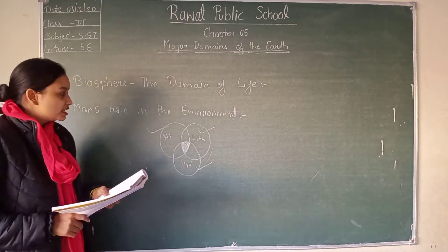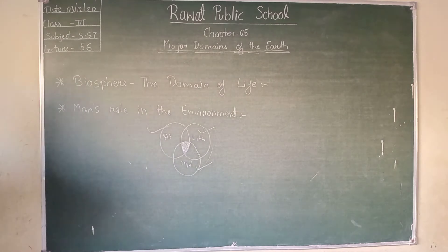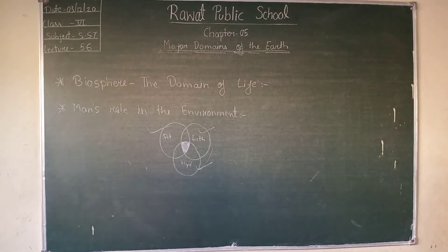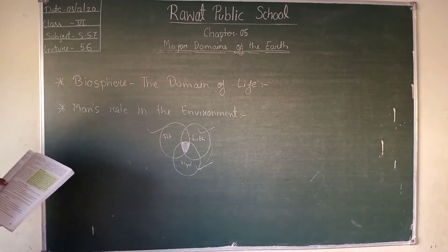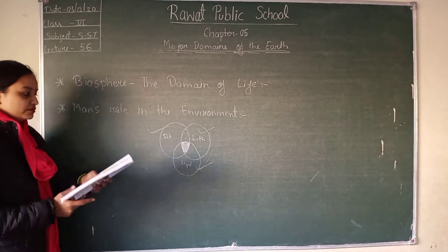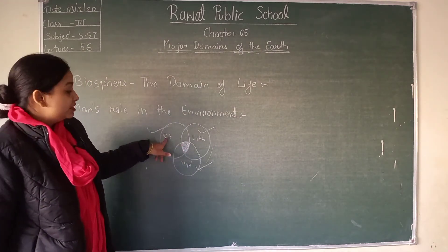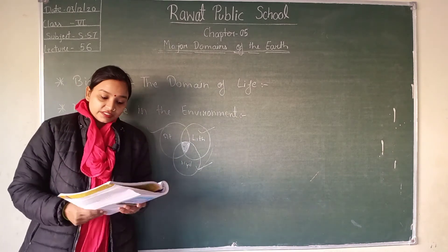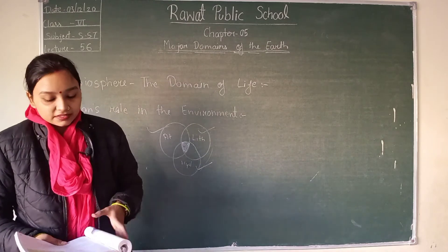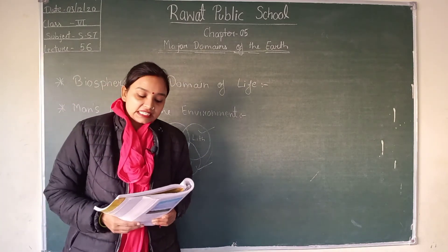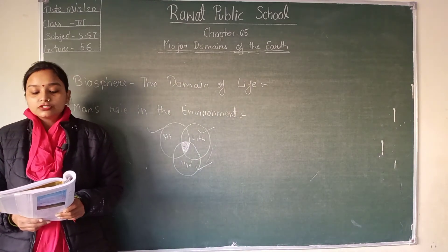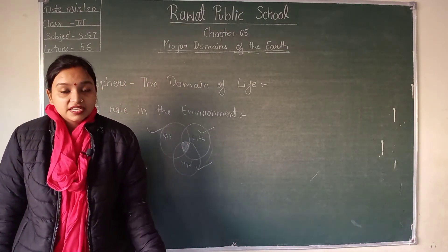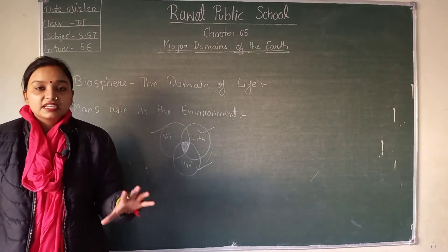Now we will discuss our last topic: Man's Role in the Environment. Man is an important component of the biosphere, but his unsustainable needs and greed have greatly affected the environment. His needs are so many that the environment is not able to maintain balance.